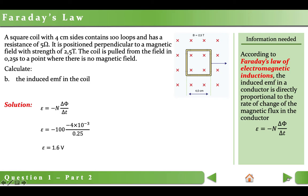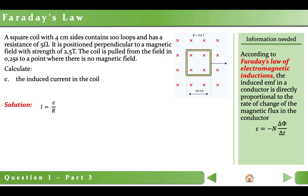And the last part of the question: Calculate the induced current in the coil. We know the EMF and we know the resistance. To calculate the induced current, we can use Ohm's law: current equals EMF over resistance. EMF is 1.6 volts, resistance is 5 ohms, and the induced current will be 0.32 amperes.